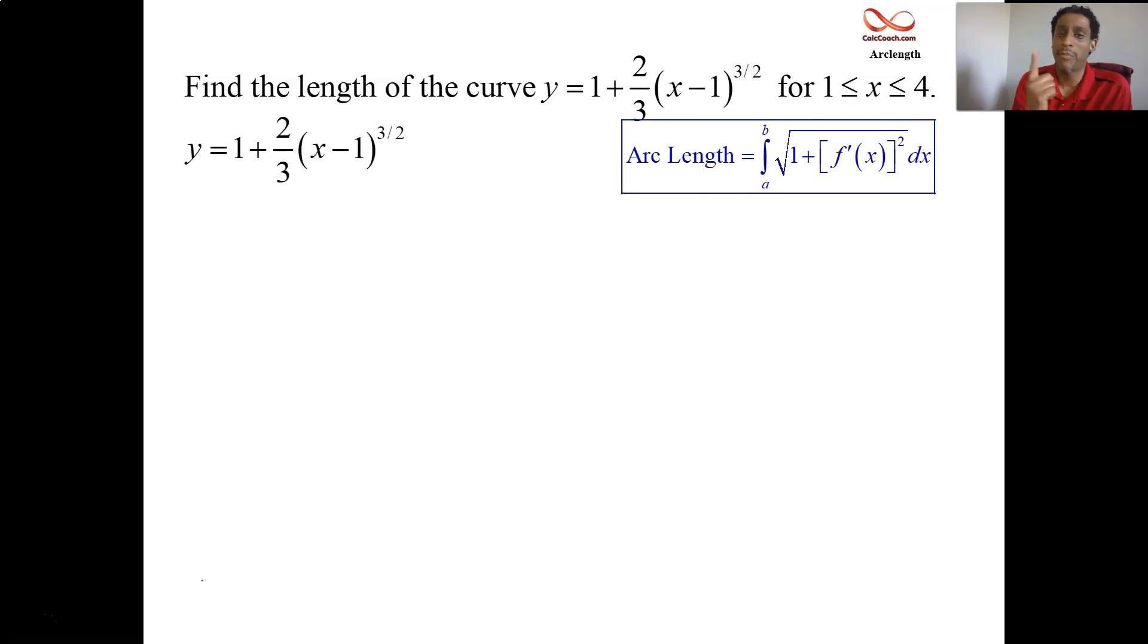You have your function. Step one, take the derivative. You'll bring down the three halves. You'll take it to the one half. But the three halves and the two thirds, they'll cancel each other. So step one is take the derivative. Here also, I have in the animation is step two, where you square the derivative. Essentially, the derivative is the square root of x minus one. So the square of it is just x minus one.